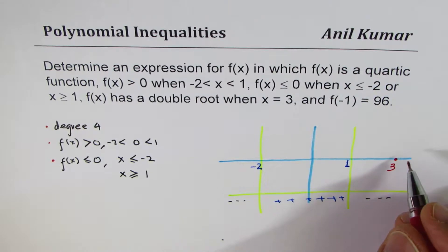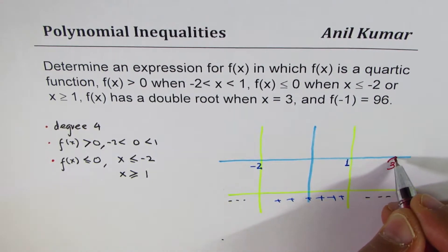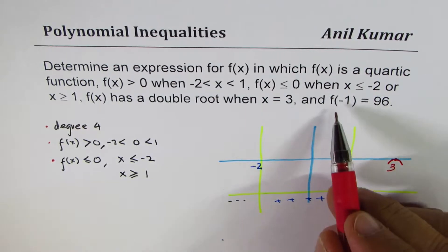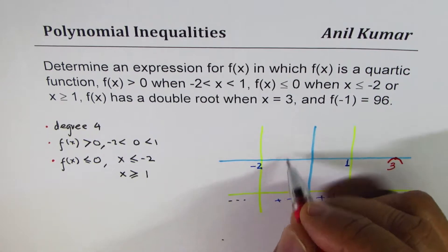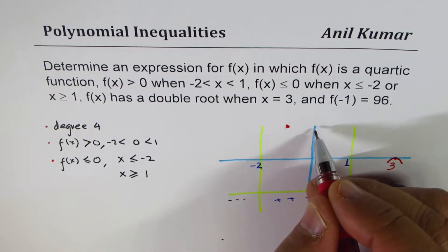Double root means since we are going to negative, it has to turn at 3. Do you understand? That is kind of double root at 3. And the value at minus 1 is 96. So, at minus 1 somewhere, we have a high value of 96. Is that okay?